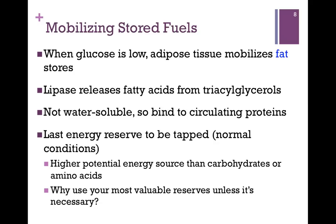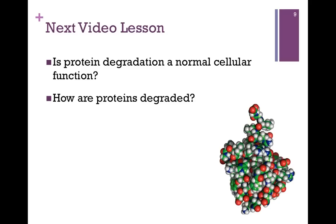Fatty acids represent a very high potential energy source — more so than carbohydrates or amino acids — and we'll see this more particularly when we get to Chapter 17. So why would you use your most valuable reserve unless it's necessary? We're going to break down glucose first, and then if we need to, we'll break down the fat. In our next video lesson, we want to see: is protein degraded as a part of normal cellular function, and if so, how are they degraded?